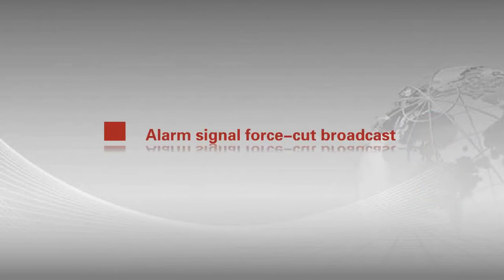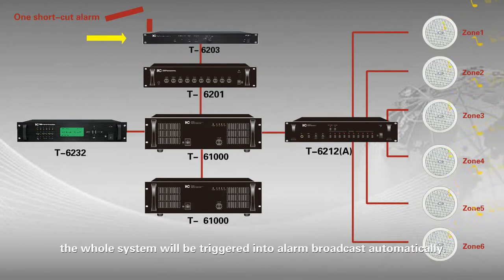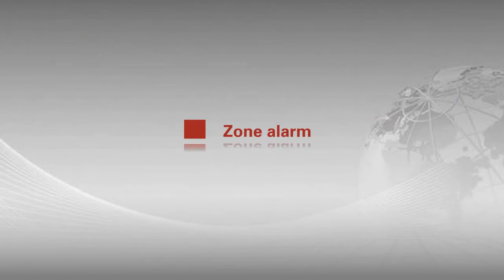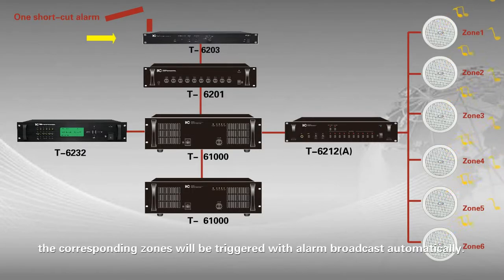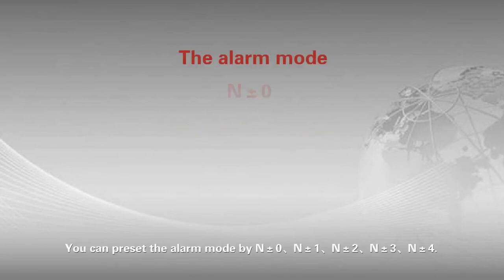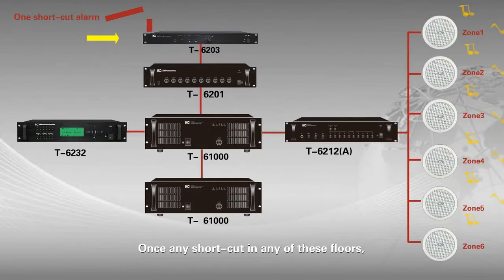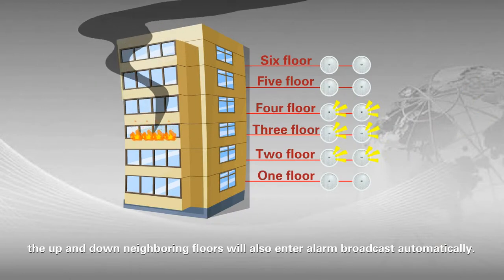Alarm signal priority broadcast. All-zone alarm: matching with the alarm generator, once there is a shocker alarm the whole system is triggered into alarm broadcast automatically. Drone alarm: once there is a shortcut alarm, the corresponding drones trigger alarm broadcast automatically. Neighboring alarm: you can preset the alarm mode by N±0, N±1, N±2, N±3, N±4 — once any shortcut on any floor triggers, the up and down neighboring floors will also enter alarm broadcast automatically.